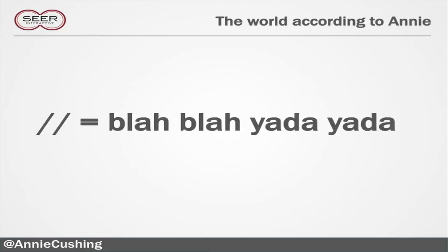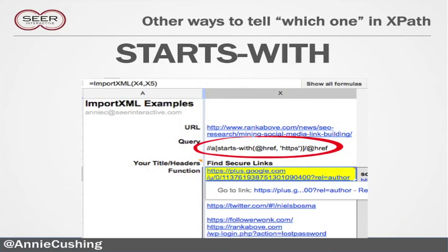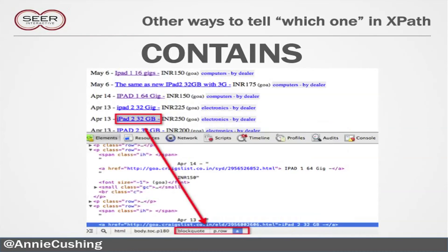The double forward slash means: there's a bunch of stuff before the node that I really want, so I'm going to skip it. And you can even have it in the middle — so you could say: I need this div with a class equal to 'main', and then there are a bunch of other nodes I don't care about, and then I want the second blockquote. I'm going to fly through a few more qualifiers you can use as you get more advanced. You can use 'starts-with' — in this example I scraped just links from secure sites by saying it has to start with HTTPS. Or you can use 'contains' — I scraped just links that had 'iPad' in them.